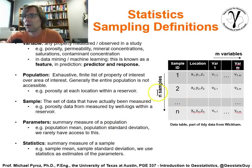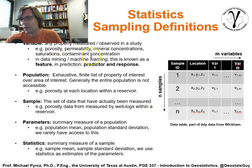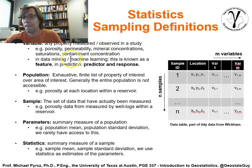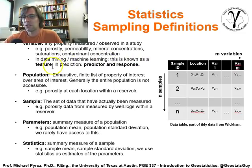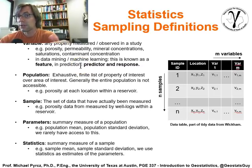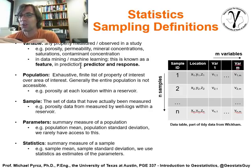Let's talk about some sampling definitions. A variable is any property that's been measured or observed in the study — it could be porosity, permeability, mineral concentration, saturation, contaminant concentrations, and so forth. In data mining and machine learning this is known as a feature. If we're dealing with prediction, we break up our variables into predictors — that tell us something — and the response — the thing we're trying to predict with the predictors.